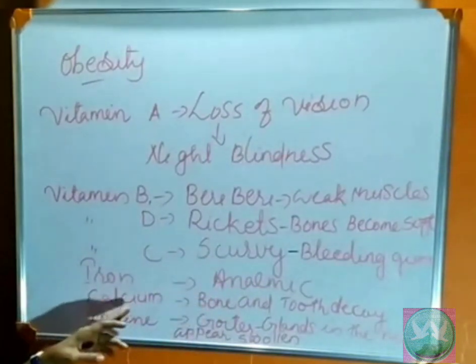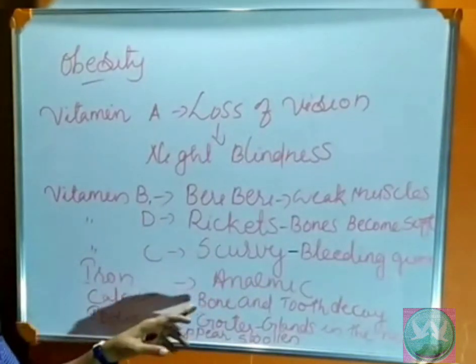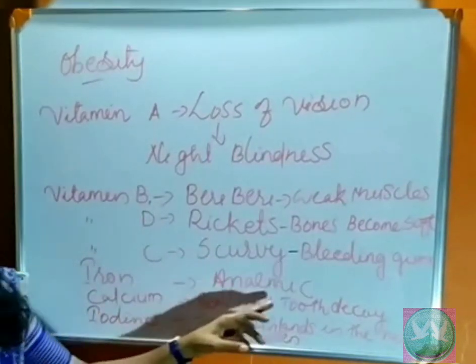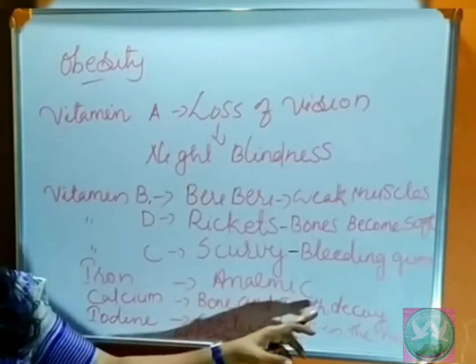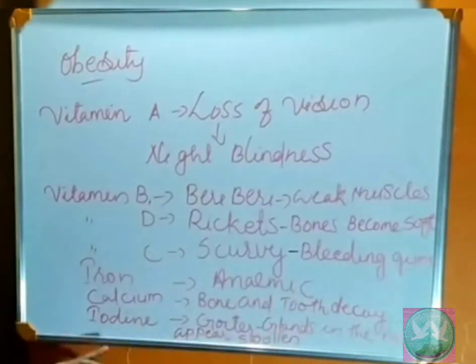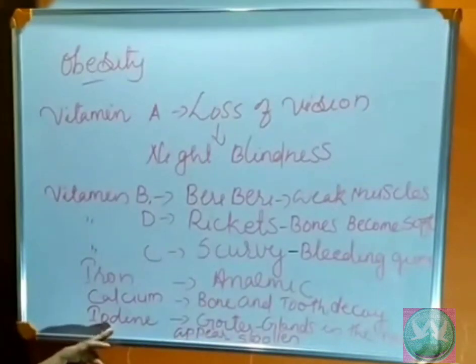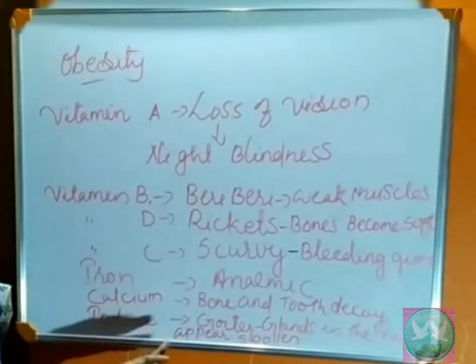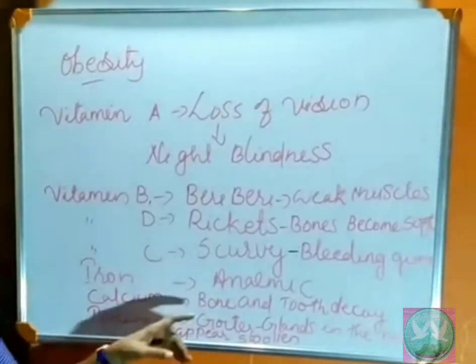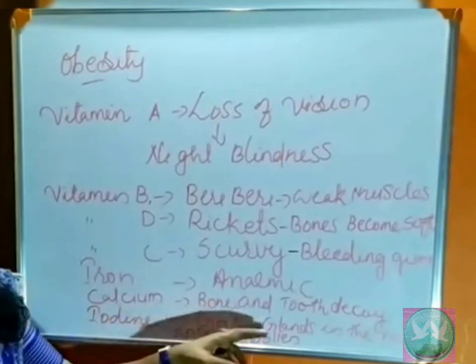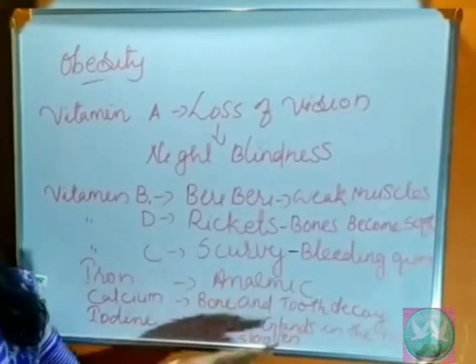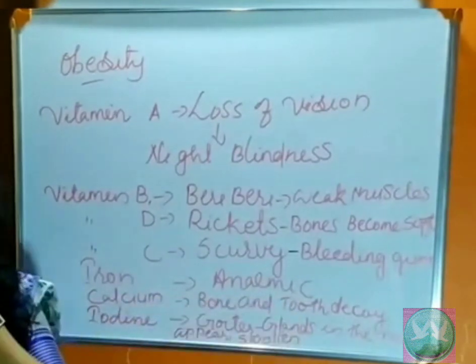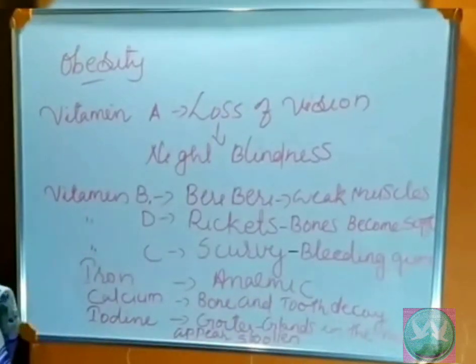Calcium deficiency causes bone and tooth decay. And due to the deficiency of iodine, goiter occurs. Goiter means the glands in the neck appear swollen.